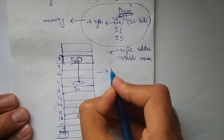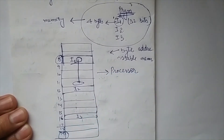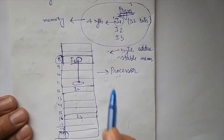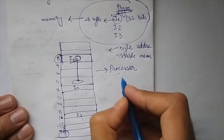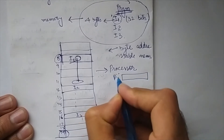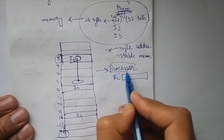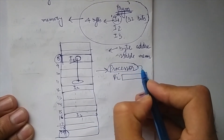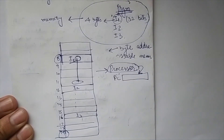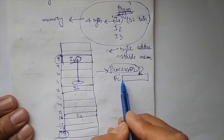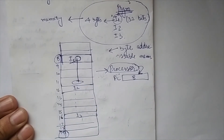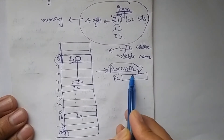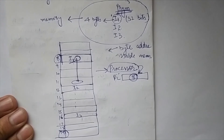Now the processor wants to execute this program, so it needs to get instructions I1, I2, and I3 from memory and execute them one after another. Inside the processor there is a special register called the program counter. Whenever the processor wants to execute an instruction, it first gets the address of that instruction from the program counter. At the start, the address in the PC will be 8, since I1 is stored at address 8.